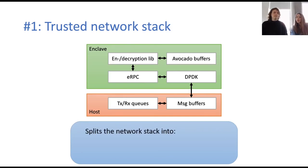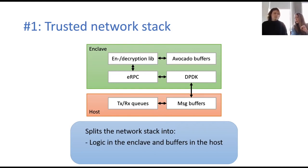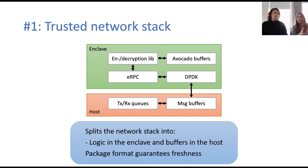In Avocado, the network stack is split into two parts: the logic code runs inside the enclave and is protected, while the message buffers reside in the untrusted host memory, optimizing enclave memory usage. Additionally, we designed a secure package format that guarantees freshness — meaning Avocado can detect packages that are stale. For example, if Avocado wants to send a message from one node to another, it takes the message from the buffer and passes it to the encryption/decryption library, which creates the package format providing confidentiality, integrity, and freshness detection guarantees.